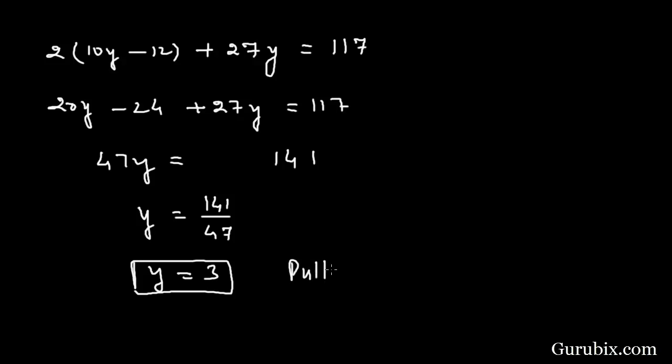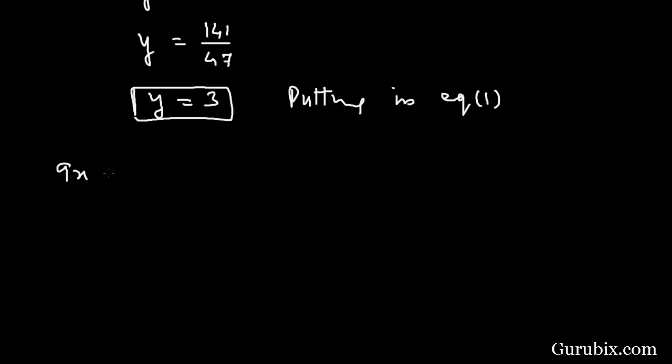And now we shall put this value of y in equation number 1. 9x minus 10y, y is 3, equals minus 12. 9x equals minus 12 plus 30. This means 18. So 9x equals 18. Therefore x equals 2.